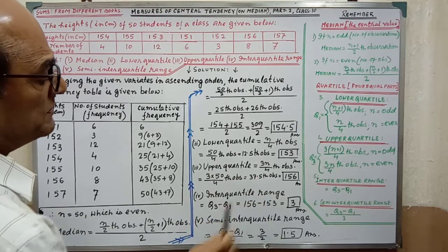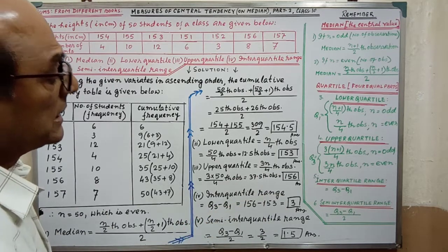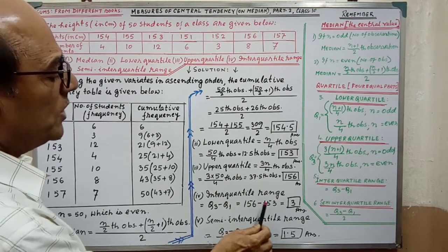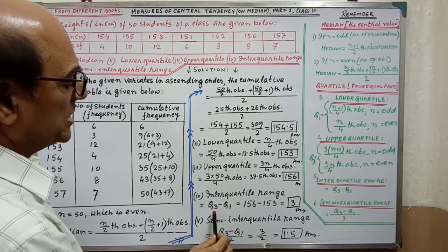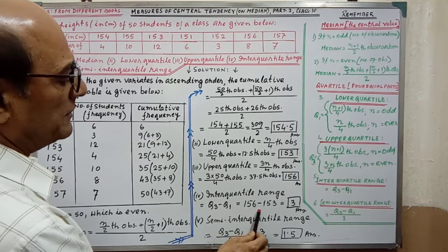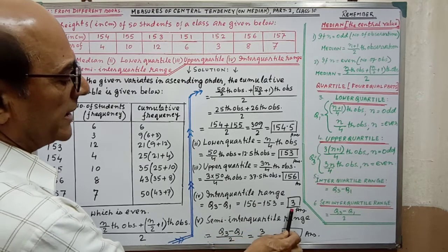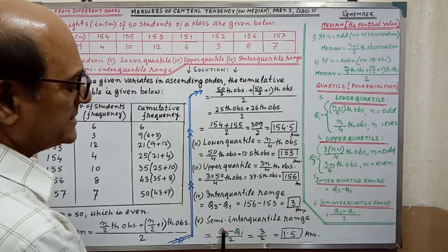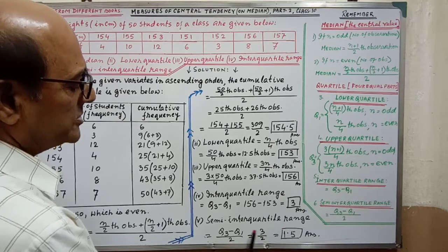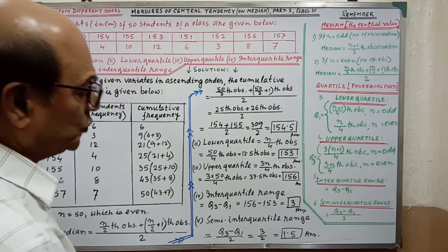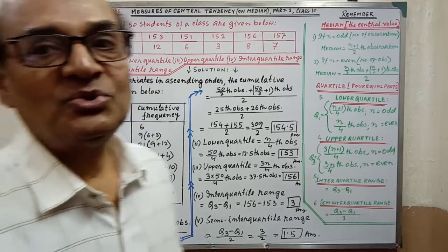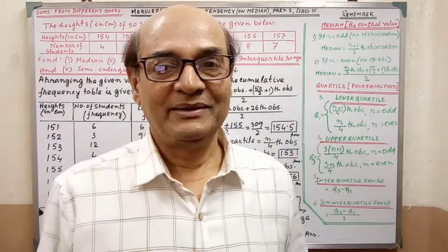You have to understand this part clearly. Then the inter-quartile range, that is Q3 minus Q1: after putting the values 156 minus 153, we get 3. And the semi-inter-quartile range is 3 divided by 2, which equals 1.5.